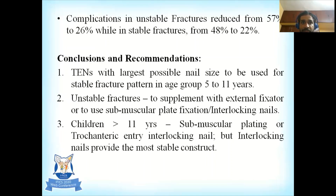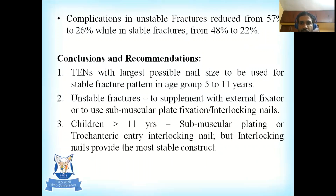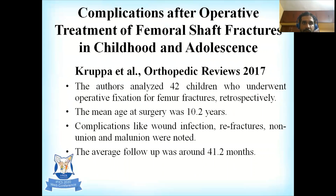Complications in unstable fractures reduced from 57% to 26%, and in stable fractures from 40% to 22%. Recommendations include using TENs with the largest possible nail size for stable fracture patterns in ages 5–11 years. For unstable fractures, supplementation with an external fixator or use of submuscular plate or interlocked nails is advised. For children over 11 years, submuscular plating or trochanteric entry interlocked nails are recommended, with interlocked nails providing the most stable construct.